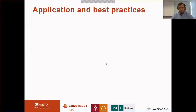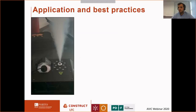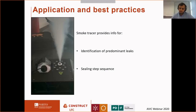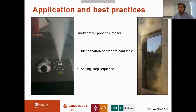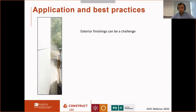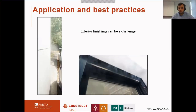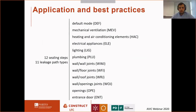For the application and best practices, a case study was assessed. We used a smoke tracer to identify predominant leaks and to establish the sealing step sequence. While some leaks were easy to identify, others were a challenge because of serious finishings. After the initial assessment, 12 sealing steps and 11 leakage path types were selected, including mechanical ventilation, heating and air conditioning elements, plumbing, several types of joints, openings, and the entrance door due to its lower door gap.